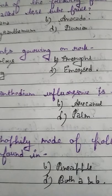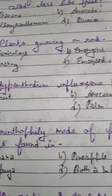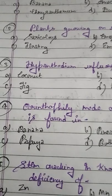Student, question number 2. Plants growing on rocks are called — Option A: Saxicolous, Option B: Emergent, Option C: Floating, Option D: Emerged. The correct answer is Saxicolous. Plants which are growing on rocks are called Saxicolous. Please students remember it.